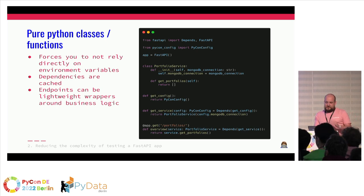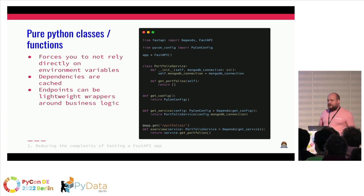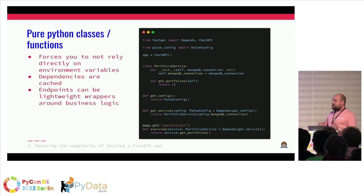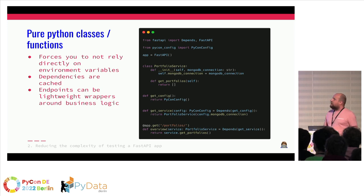Another benefit — at least what we try to do — is keeping our endpoints lightweight. They serve as input of data, pass it on to other Python functions to do computations, and return the result. By using dependency injection, you're forced to handle configuration somewhere else, which you pass on to your business logic. You end up with pure Python classes and functions that are easy to test — you can just instantiate them or call them with the right config, without complex patching and mocking.